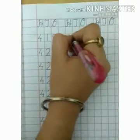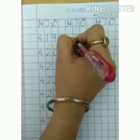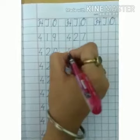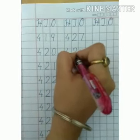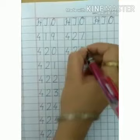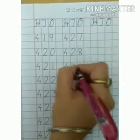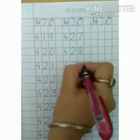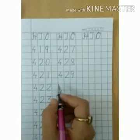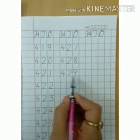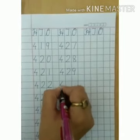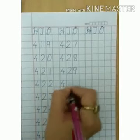426, 427, 428, 429. After 429, we will write 430.